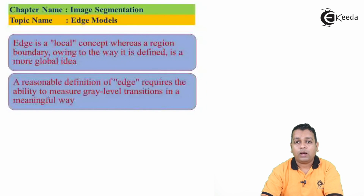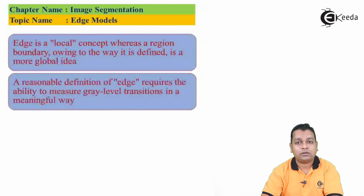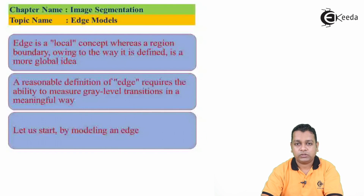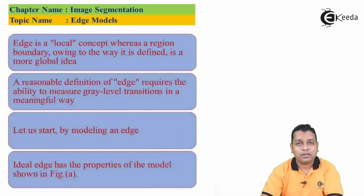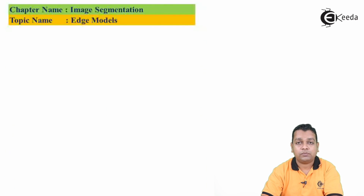A reasonable definition of an edge in any of these images requires the ability to measure the gray level transition in a meaningful way. So let us start by modeling such types of edges. The ideal edge is the pole we take here, with properties of the model that we can visualize in Figure A.